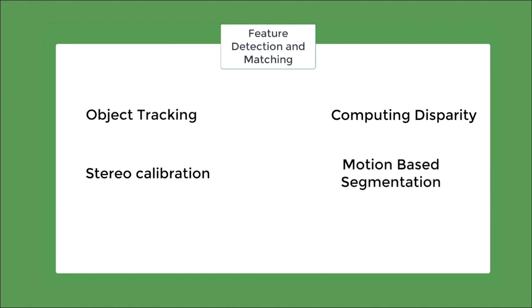So let's begin. The task of feature detection and matching is part of many computer vision applications. Automated object tracking, point matching for computing disparity, stereo calibration, motion-based segmentation, object recognition, 3D construction are just a few of many.